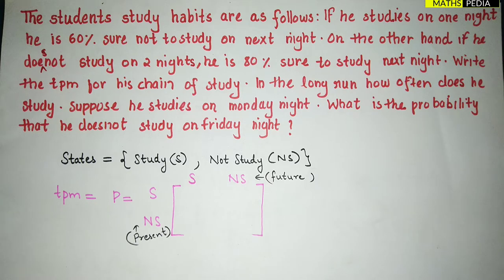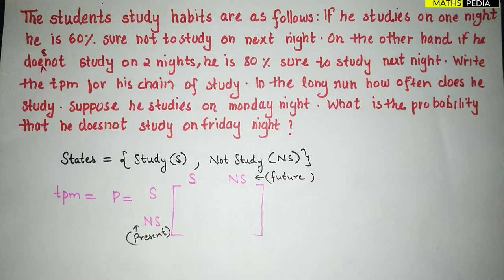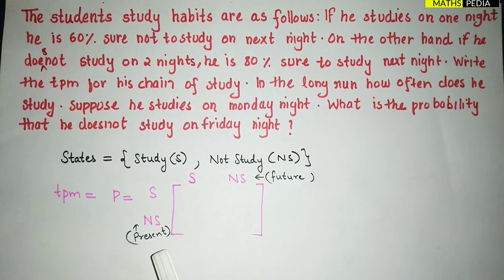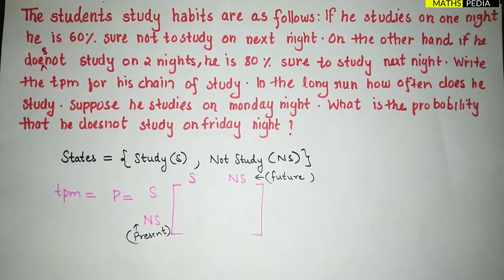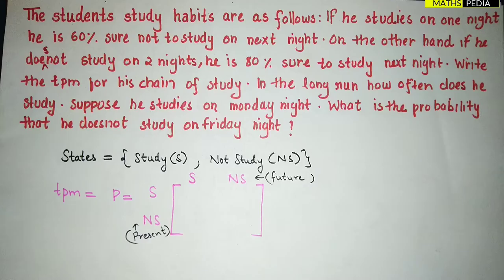In this video we are going to discuss a problem based on Markov process. Markov process is a stochastic process in which the generation of the probability vector depends only on the present state. The main point is that it should depend on the present state — only then can we say it is a Markov process.